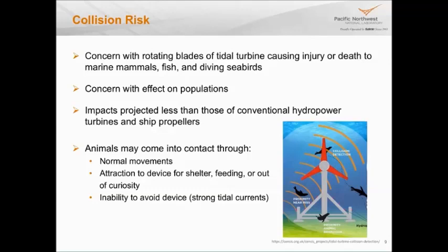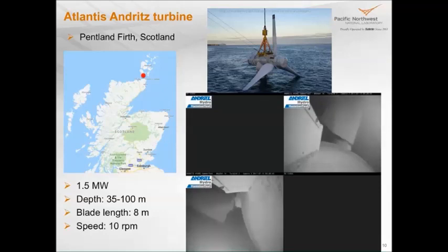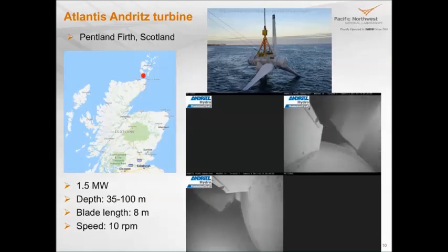Animals might come into close proximity to a turbine just unwittingly in normal movements, might even be attracted for shelter or feeding purposes, or they might simply not be able to avoid the device — and this is really dependent on how strong the animal is. What you're seeing here is underwater video on the Andritz turbine in Pentland Firth. This is part of the first commercial array of tidal turbines in the world. The shallowest turbine has cameras on it at 35 meters, and they're building out to somewhat deeper.